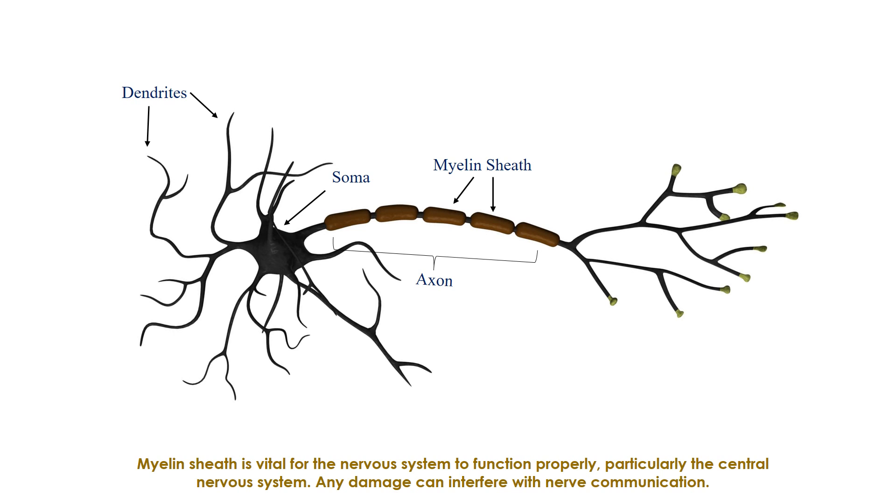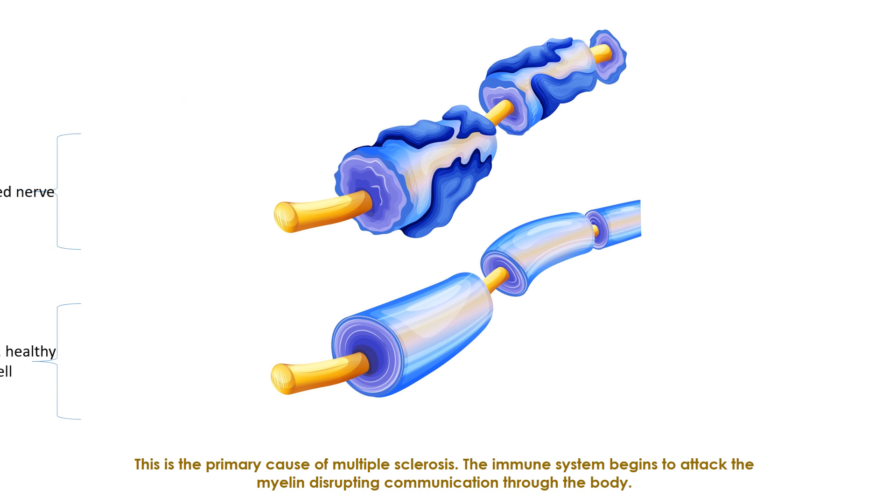Any damage can interfere with nerve communication. This is the primary cause of multiple sclerosis. The immune system begins to attack the myelin, disrupting communication through the body.